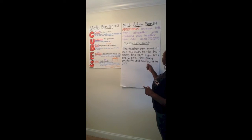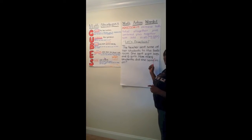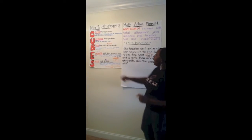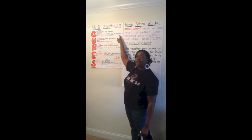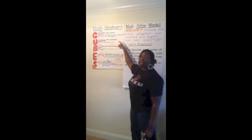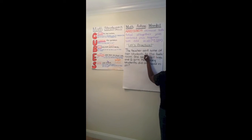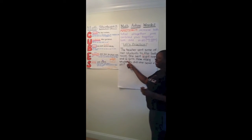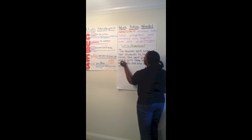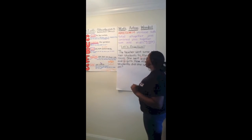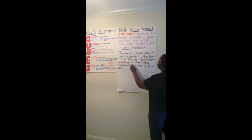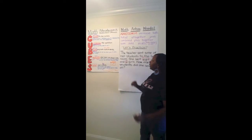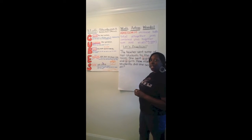C means circle the key numbers. The teacher sent eight boys — since it's written in word form, we write it in standard form above the word, so I write the number 8 above 'eight.' She sent six girls — since 6 is already written in standard form, I circle it. So far we have circled two key numbers: 8 and 6.